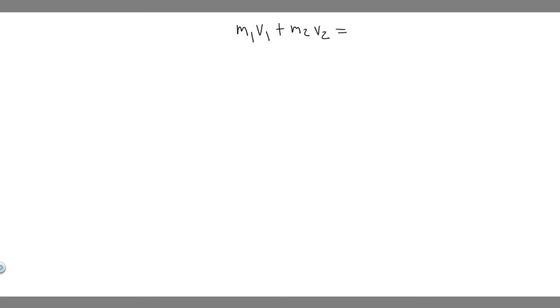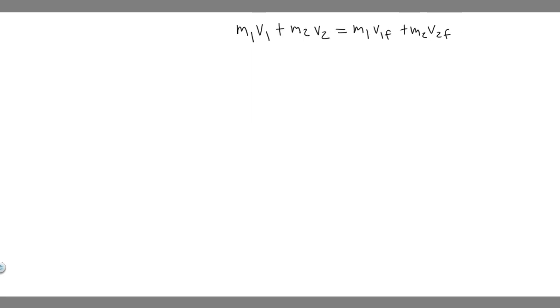In order to solve these problems, there are two main formulas you need to know that deal with conservation of momentum. The first is M1V1 plus M2V2 equals M1V1_final plus M2V2_final — your initial momentum equals your final momentum. The second formula is V1 minus V2 equals negative V1_final minus V2_final.